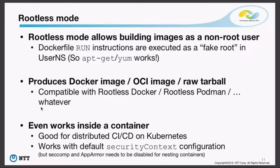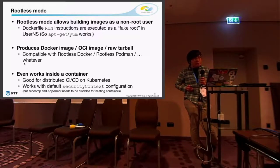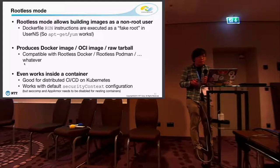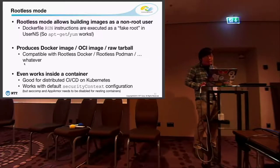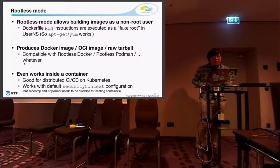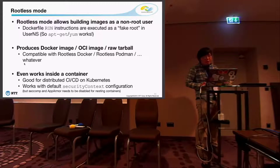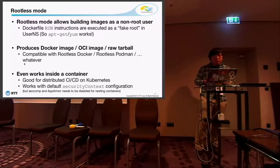BuildKit can produce Docker image archives and also OCI image archives, or just raw classic tarballs. The output image is compatible with whatever — you can use Docker, Podman, Singularity, ClearCloud, or whatever. You can also execute BuildKit inside a container, which is good for CI/CD or Kubernetes. For Kubernetes, you don't need to tweak the security configuration, but at least you need to disable seccomp and AppArmor, because BuildKit needs to nest containers on top of the BuildKit container.